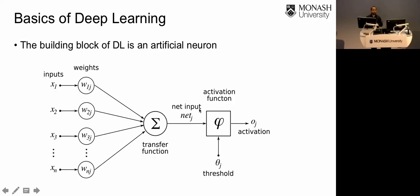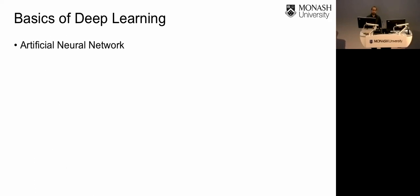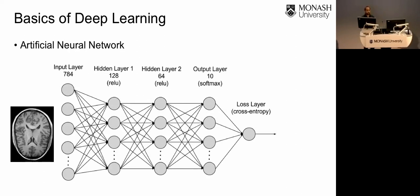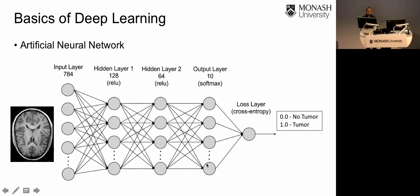We can arrange artificial neurons in different configurations to create an artificial neural network. One configuration is the fully connected network — a layered architecture with an input layer, an output layer, and hidden layers in between, where each neuron is connected to all neurons in the preceding layer. This architecture can be used for predictions and classification. For example, with a brain image you might predict whether it contains a tumor: the output should be 1 if it contains a tumor, or 0 if it does not.